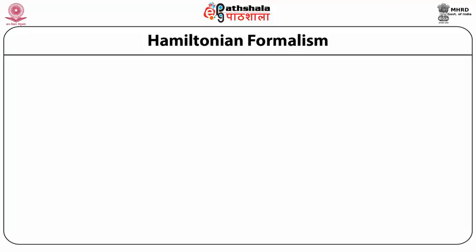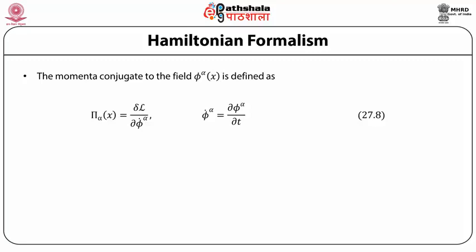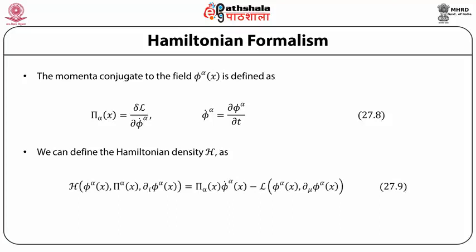We next move on to the Hamiltonian formalism. The momentum conjugate to the field φ_α(x) is defined as π_α(x) = δℒ/δφ̇(x). We can define the Hamiltonian density H as a function of φ(x), π(x), and ∂_i φ_α(x), which equals π(x) φ̇(x) − ℒ(φ_α(x), ∂_μ φ_α(x)). The time derivative of the field φ_α(x) is replaced by the conjugate field momenta π_α(x), and the Hamiltonian is a function of the field φ_α(x), conjugate momenta π_α(x), and the spatial derivatives ∂_i φ_α(x).